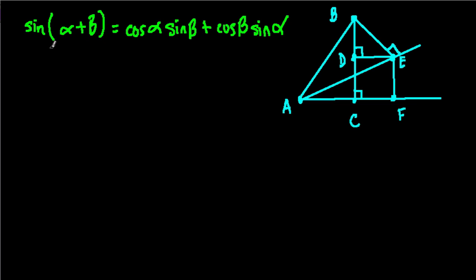For example, if we took the sine of 90 degrees, could we split that up into perhaps the sine of 50 and 40, and then take the cosine of 50 times the sine of 40 plus the cosine of 40 times the sine of 50? The answer is yes, and this diagram helps us prove that this identity makes sense.